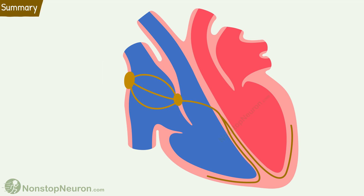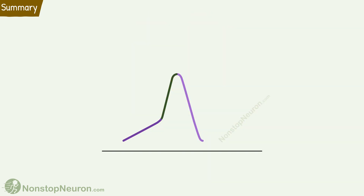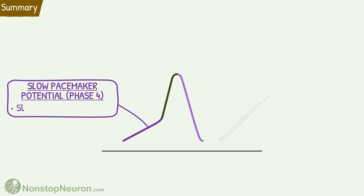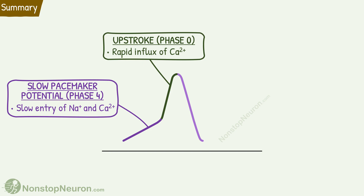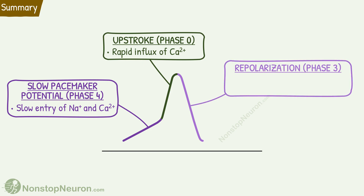Let's have a quick summary. The SA node is the normal pacemaker of the heart. The action potential in the SA node involves: slow pacemaker potential due to slow entry of sodium and calcium; upstroke due to rapid influx of calcium; and repolarization and hyperpolarization due to cessation of calcium entry and exit of potassium ions. Then potassium efflux decreases, and slow entry of sodium and calcium again brings the potential to threshold to trigger the next action potential. Thus, the SA node keeps generating action potentials on its own.